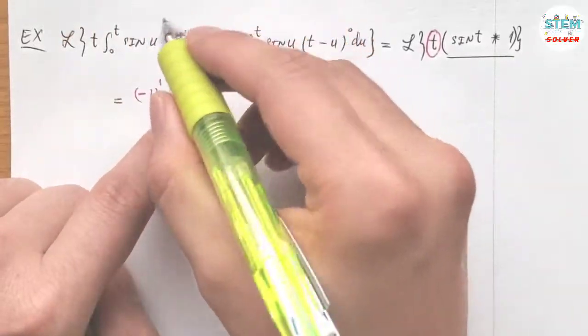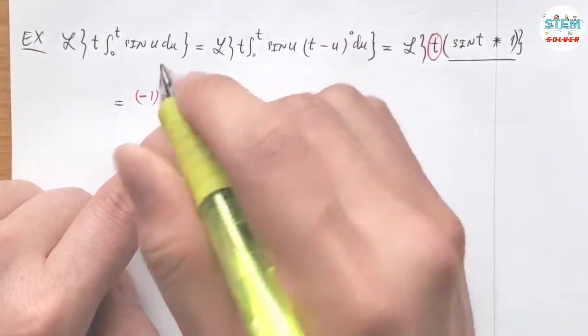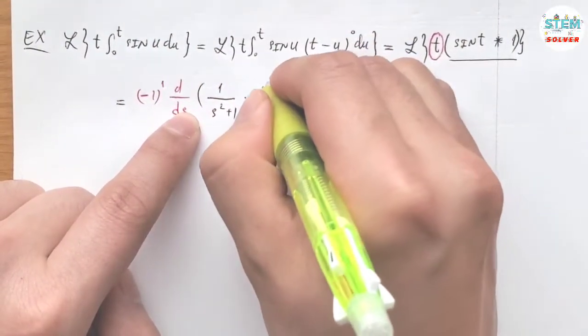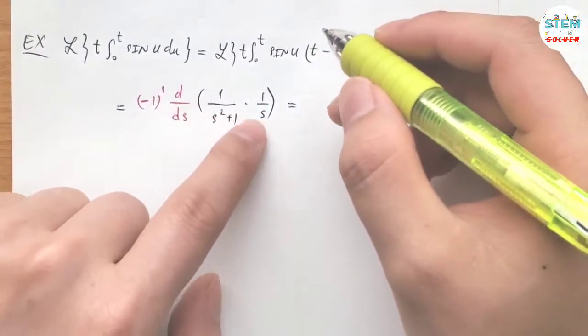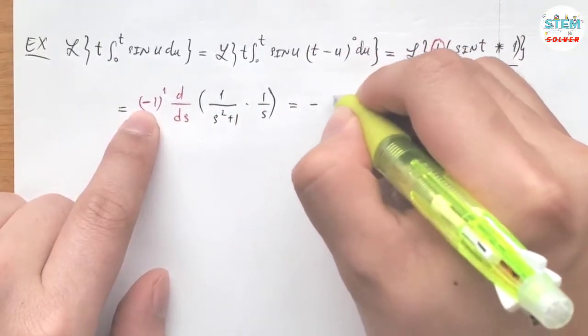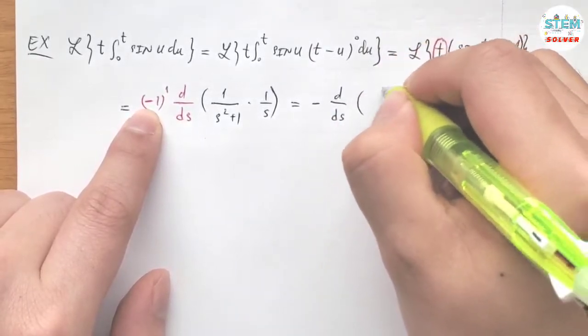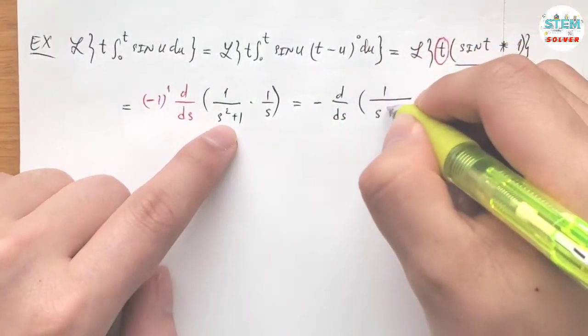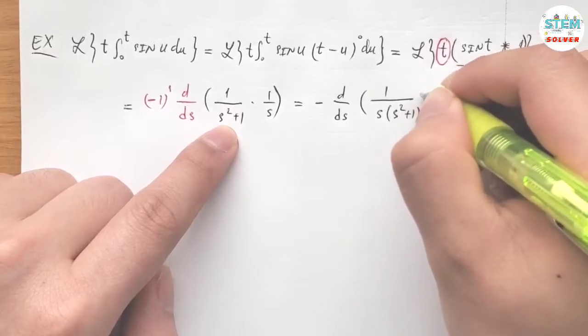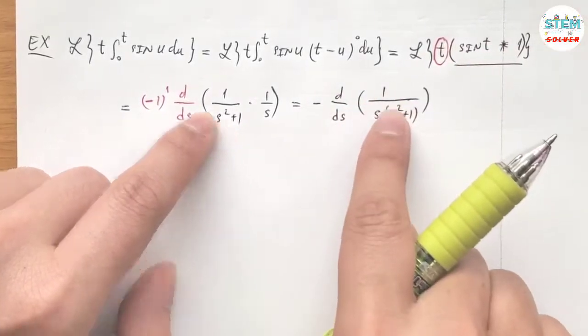So I have psi of t, which is 1 over s squared plus 1 times 1 over s. And let me simplify this first, so I have negative first derivative of 1 over s times s squared plus 1. Now take the first derivative of this.